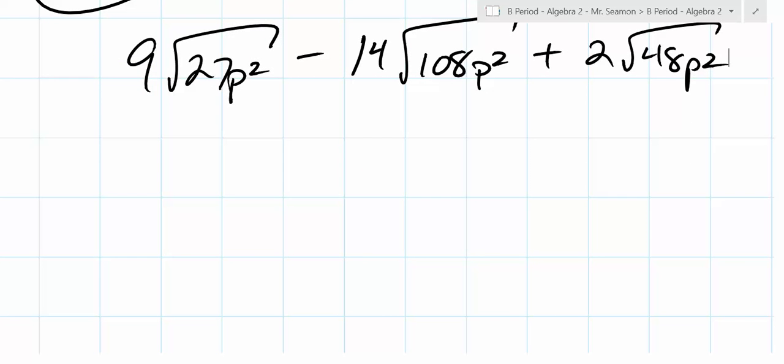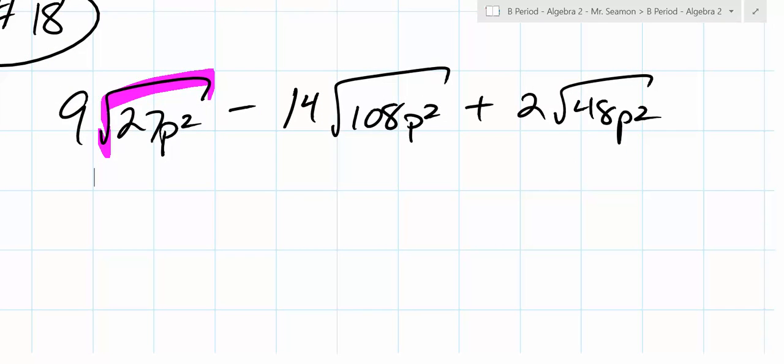The same thing underneath the radicand. The radicand is this thing right here. And these are all square roots, which is nice. So how are we going to attack this? We're going to try to build the same one.